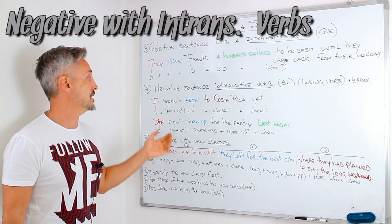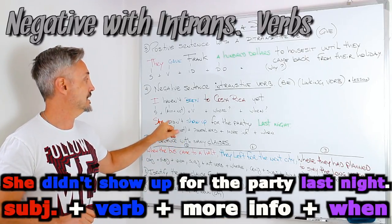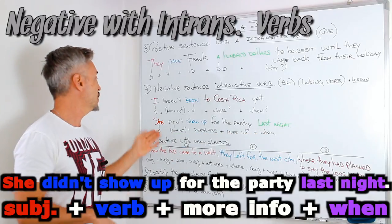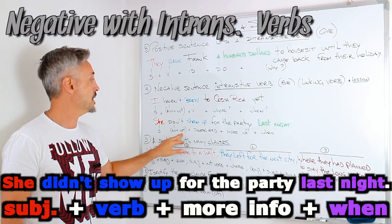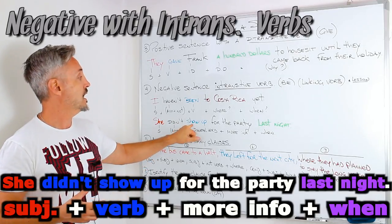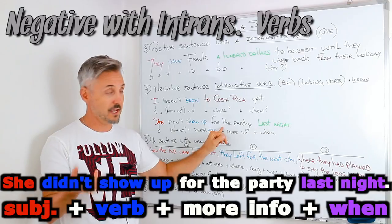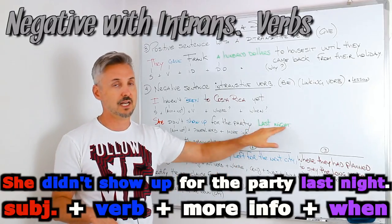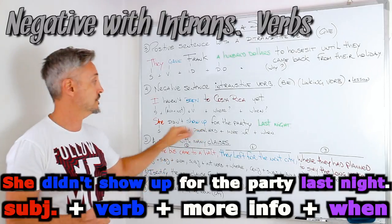Another example with a negative sentence and a phrasal verb: to show up. She didn't show up for the party last night. She is the subject, personal pronoun. Didn't — auxiliary plus not — we're talking about the past simple. Then the phrasal verb in its base form: show up, meaning appear, because we already have an indicator of the past which is did. Then for the party — more info, why. And then last night — when. Last night can also go at the beginning as a time expression. Show up is an intransitive verb — it doesn't take an object.